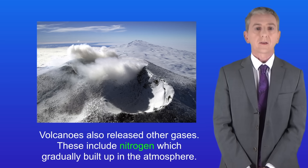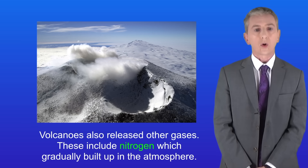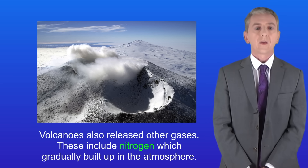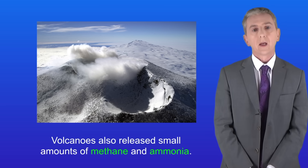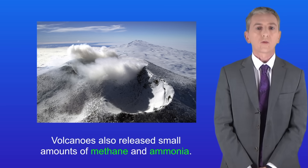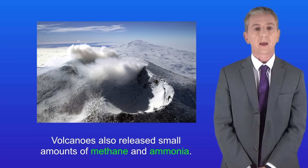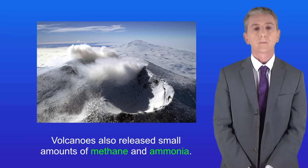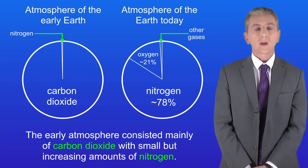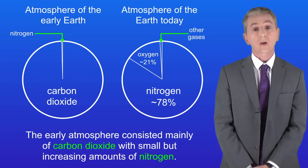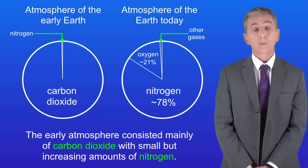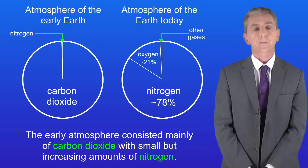Volcanoes also released other gases, including nitrogen, which gradually built up in the atmosphere. Volcanoes also released small amounts of methane and ammonia. So the early atmosphere consisted mainly of carbon dioxide with small but increasing amounts of nitrogen.